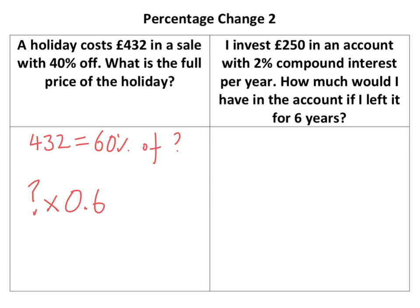That's your 40% reduction. 100 minus 40% is 60%, and 60% as a decimal is 0.6, equals £432. Now if I'm going to rearrange that, I would do £432 divided by 0.6 to get my answer for the full price of the holiday.